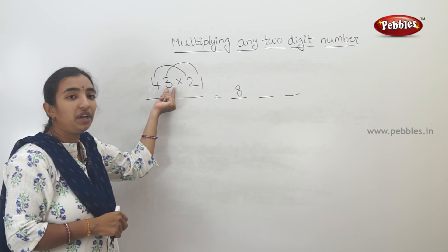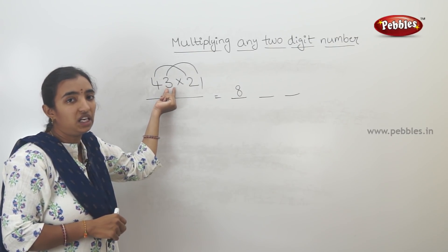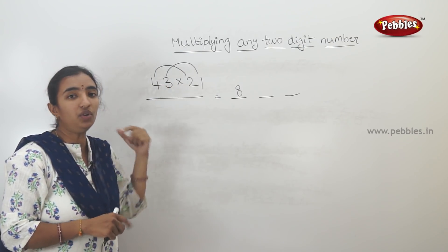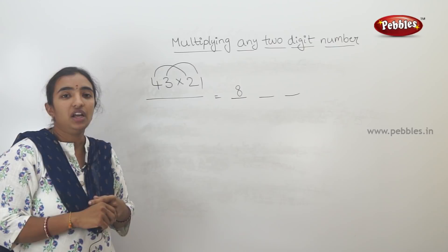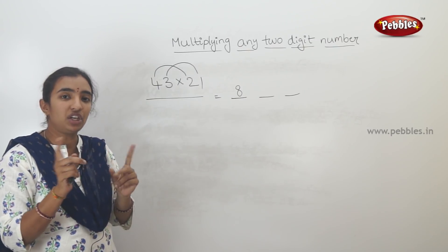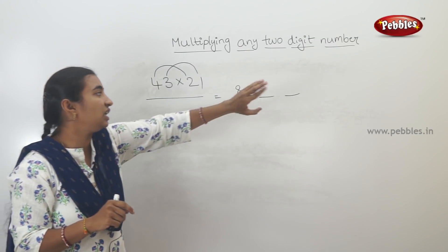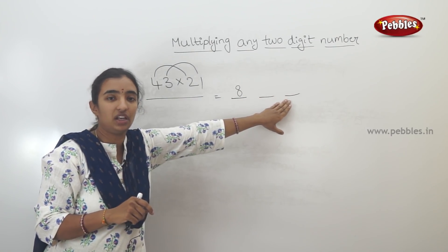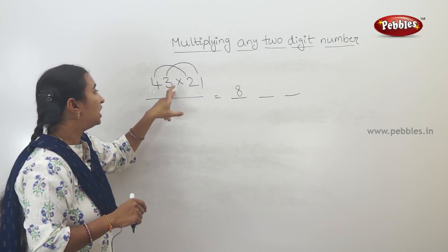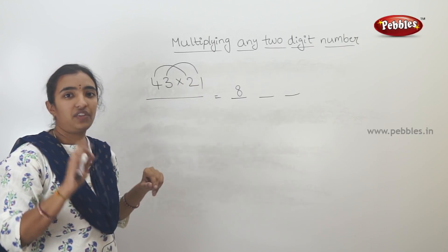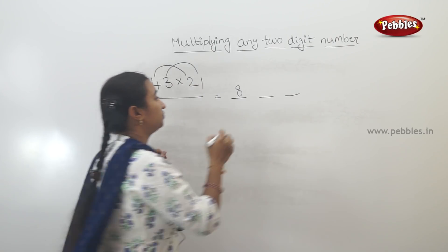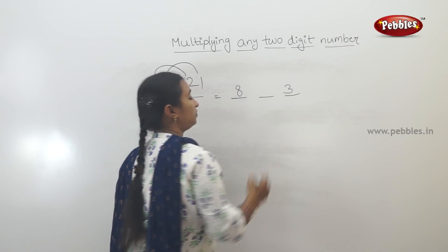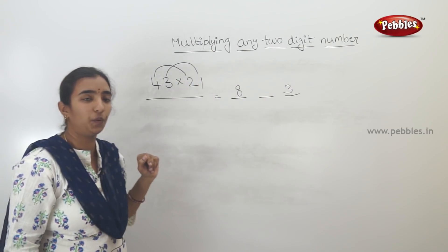The first number is 4. If 4 is multiplied by 2, it's 4 into 2, which equals 8. The second number is 3. The second numbers multiplied by the last number: 3 into 1 is 3.